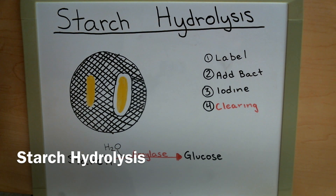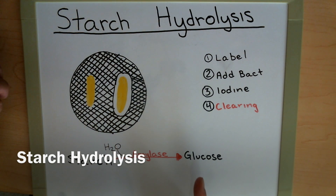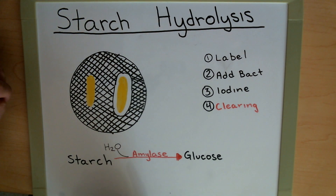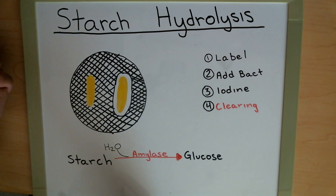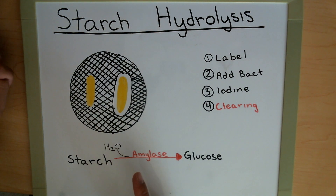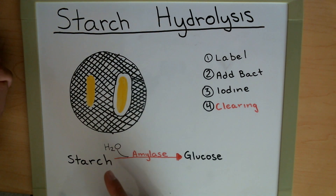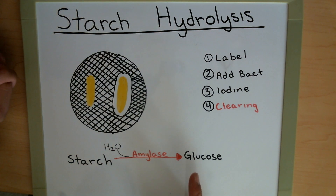In starch hydrolysis we're trying to break down starch into a smaller molecule such as glucose. Starch is too big of a molecule to enter the bacteria cells, so they have to break it down into something smaller. They use the enzyme amylase mixed with water in order to break the bonds of starch into individual molecules of glucose.